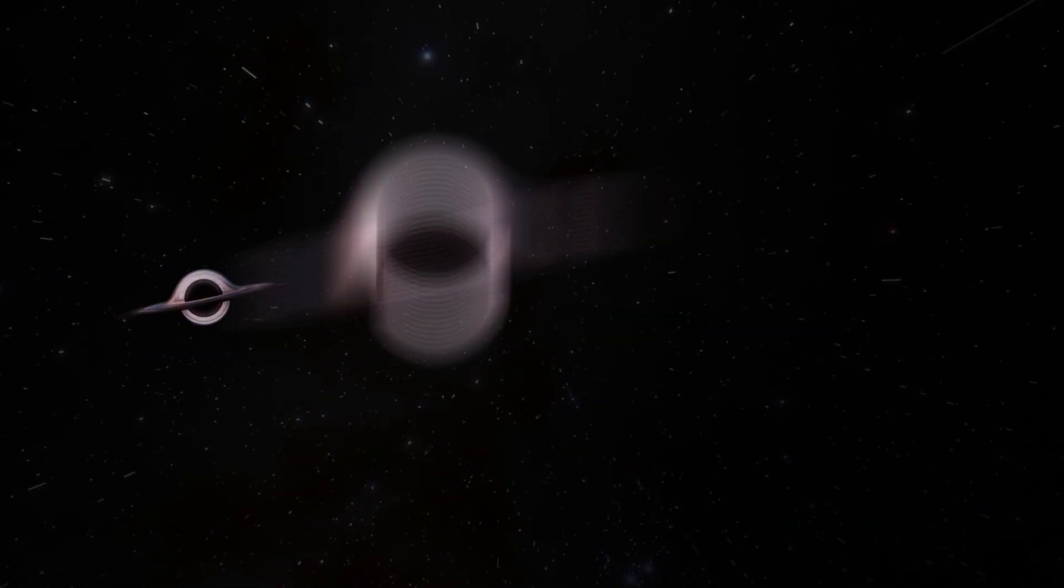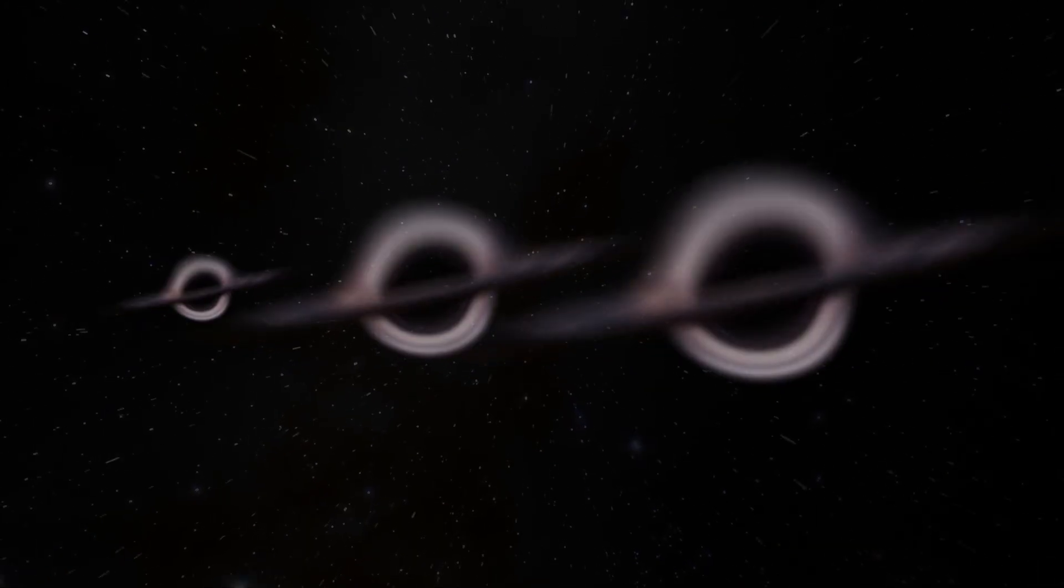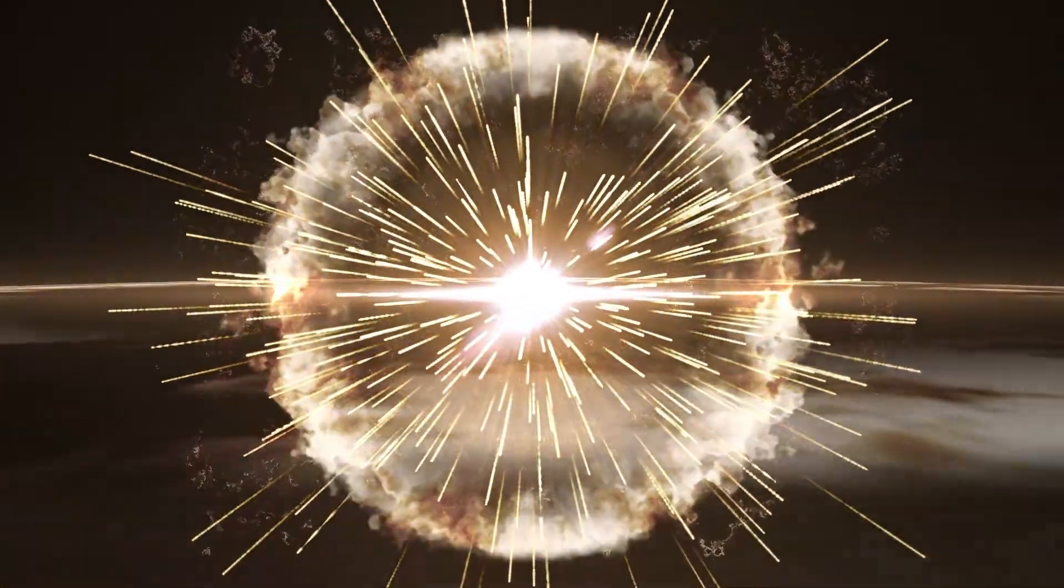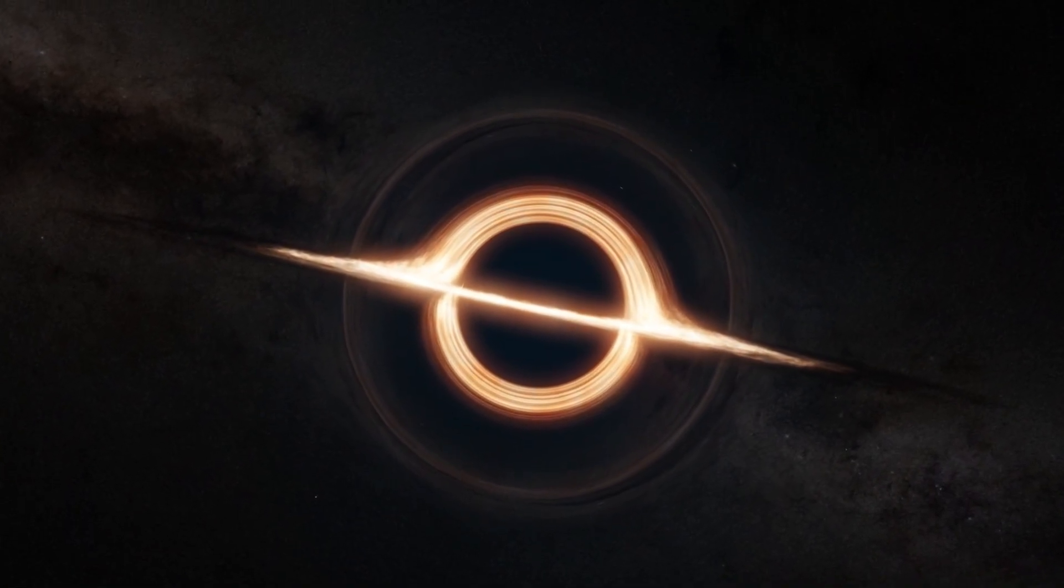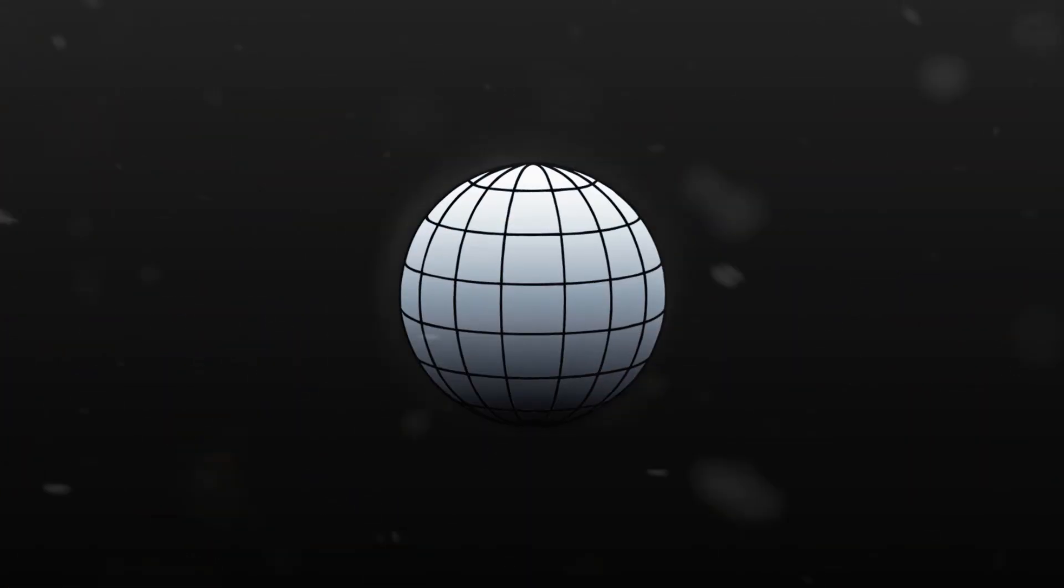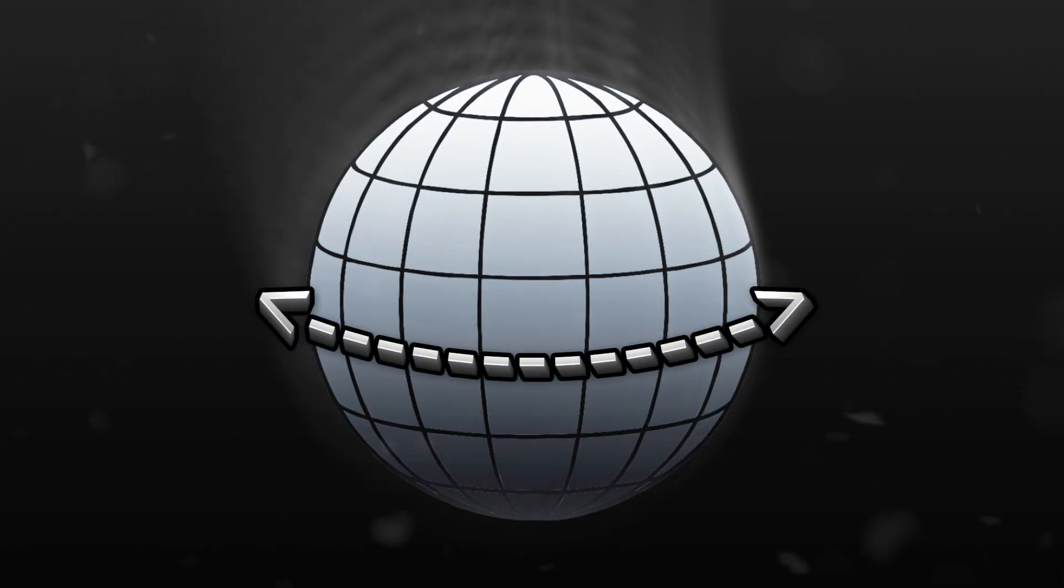Black holes come in a wide range of sizes, but none of them are small in terms of mass. A stellar black hole formed when a massive star collapses is usually between 5 and 20 times the mass of our Sun. But that entire mass is squeezed into a sphere only about 30 to 60 kilometers across.